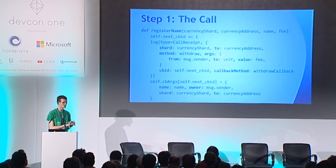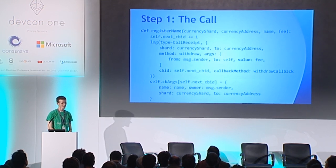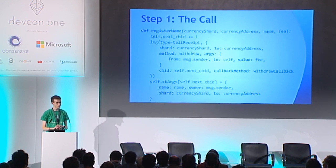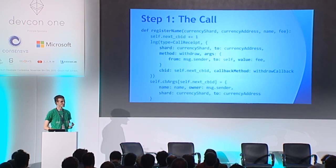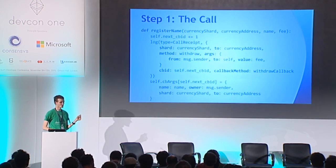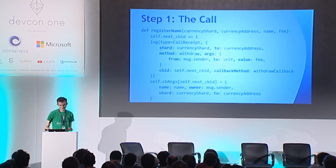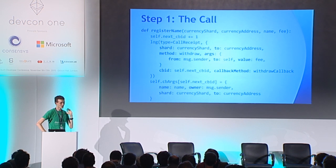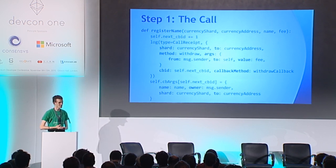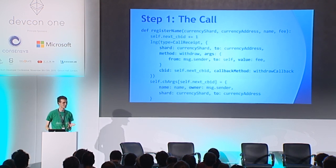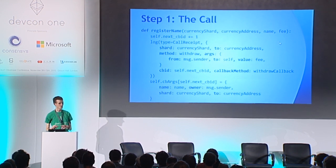Let's go through a fairly involved example. Suppose you're trying to register a domain name, and this domain registrar is so devilishly evil that it only accepts Gafcoin as payment. The domain registrar lives in shard 43, and Gafcoin lives in shard 666. The problem is that the registrar charges a fee — let's say 20 Gafcoin. How does this ensemble of the registrar and Gafcoin actually verify everything?